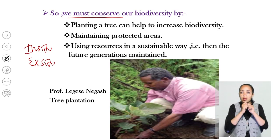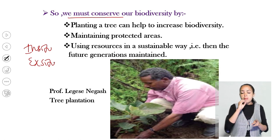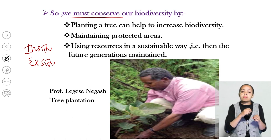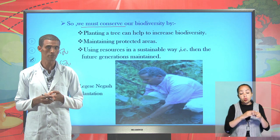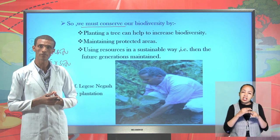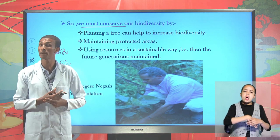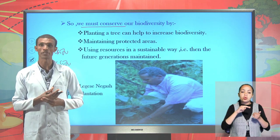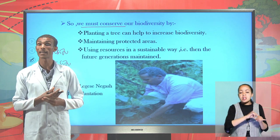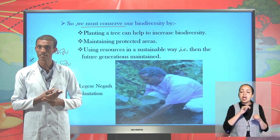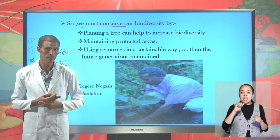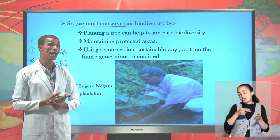When we say in-situ conservation, we mean conserving our biodiversity within a site, within its original habitat — like maintaining national parks and planting within corridors. When we say ex-situ conservation, it means conserving biodiversity outside of the original habitat — off-site conservation. Examples include botanical gardens, zoological gardens, and gene banking systems. This is what is called ex-situ conservation.